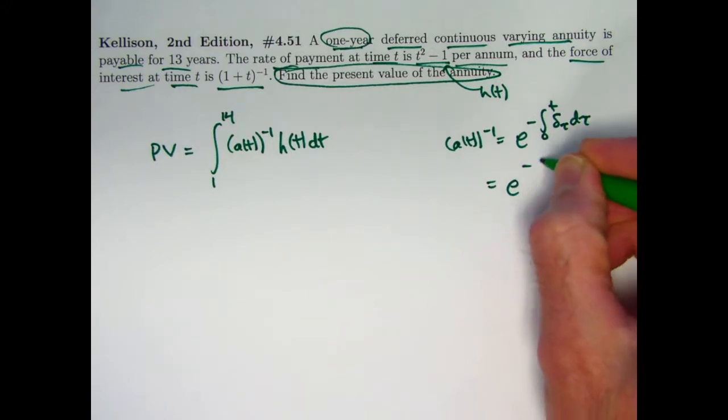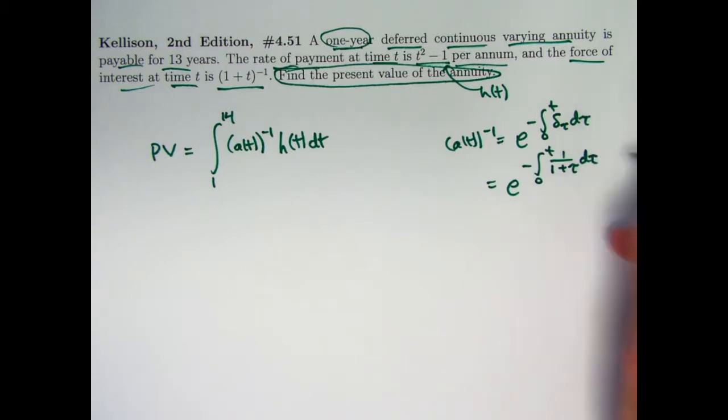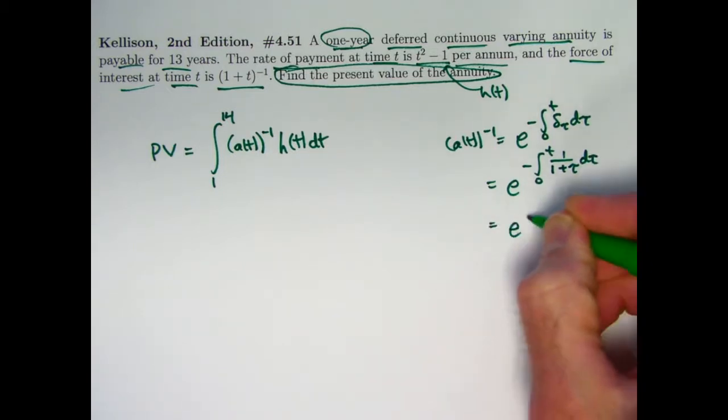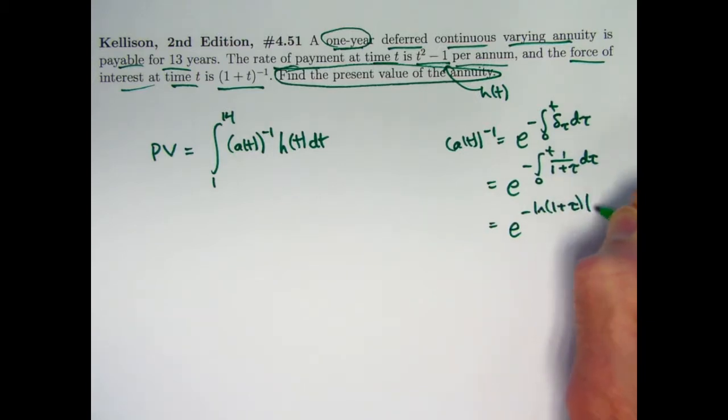So in this case that's going to be integrating 1 over 1 plus tau, d tau, from 0 to t. You're going to get a negative natural log of 1 plus tau. Tau goes from 0 to tau equals t.